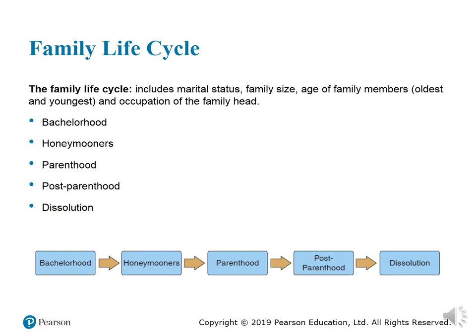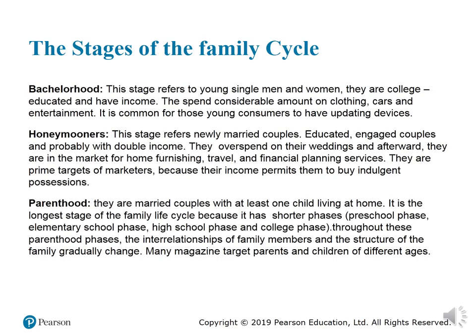The last section in this chapter is the family life cycle. The family life cycle includes different marital statuses, family size, age of family members (oldest and youngest), and occupation of the family head. There are five categories: bachelorhood, honeymooners, parenthood, post-parenthood, and dissolution. The figure shows these stages in order and explains the different stages in the following paragraphs.